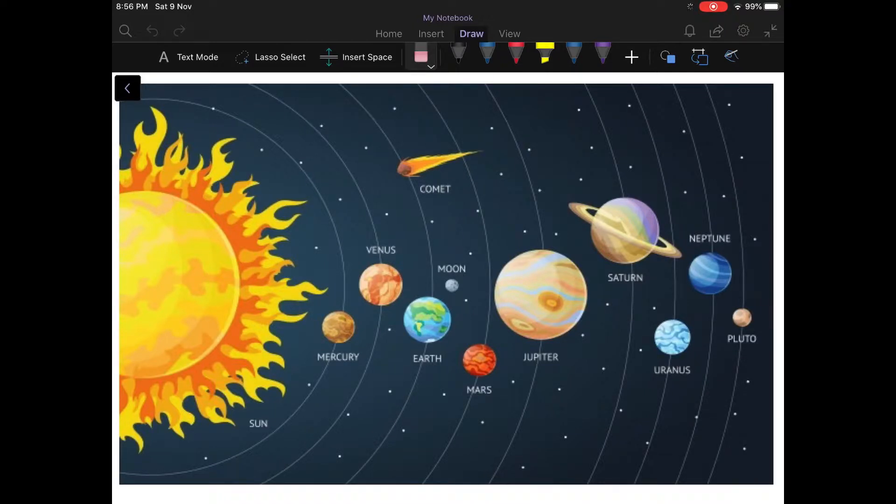The third nearest planet to the sun is our planet Earth, and then comes Mars, and then Jupiter. It accounts for 99 percent of the total mass of the planets in our solar system and it is the largest planet in our solar system.